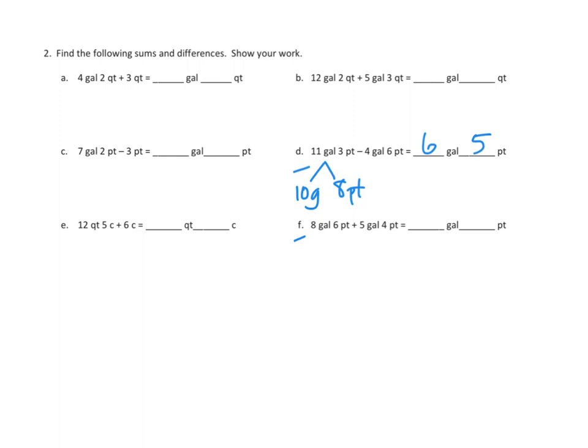Let's look at problem F. Problem F is an addition problem. Eight gallons, six pints, plus five gallons, four pints. Well, let's add our like units together. We've got our eight gallons and our five gallons, so that's thirteen gallons. And then how many pints do we have? We have six pints here and four pints there. That's ten pints. But we know that there's eight pints in a gallon. We've got more than a gallon's worth of pints, so let's break this down into eight pints and two pints, because the eight pints is the same as one gallon. And now we can combine that gallon with our thirteen other gallons to give us fourteen gallons, and we've got our two remaining pints, and that is our sum.